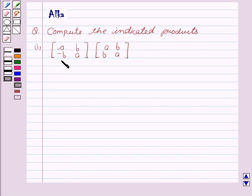Our two given matrices are A, B, -B, A and A, B, B, A. Now let's start with the solution.